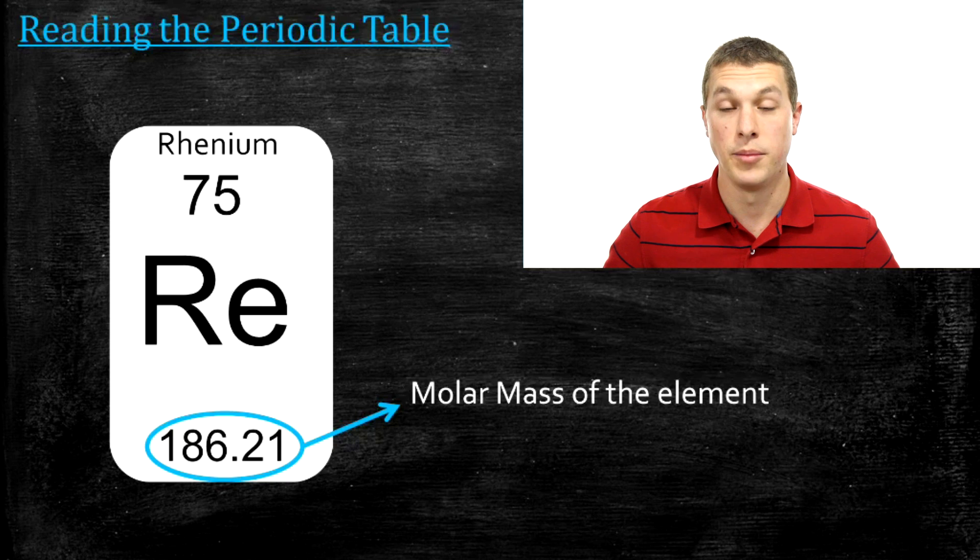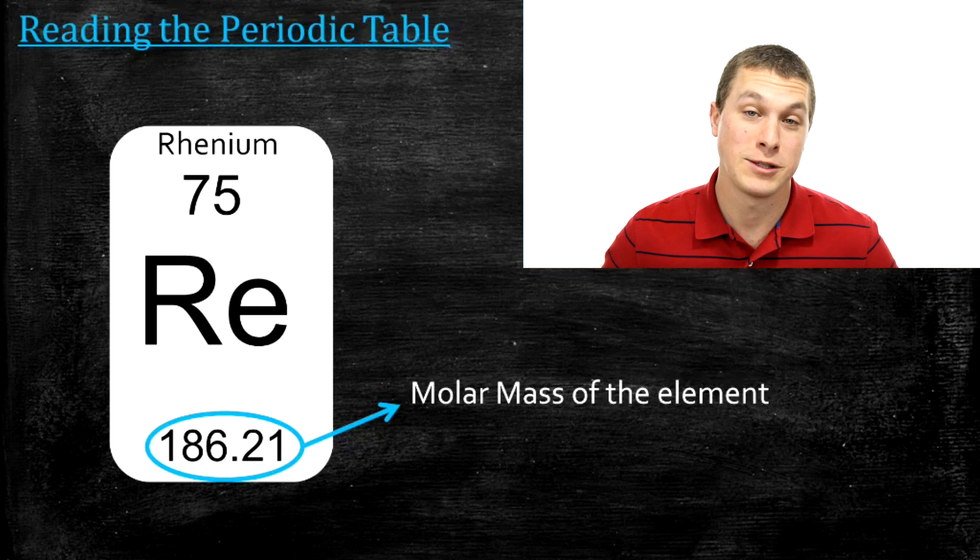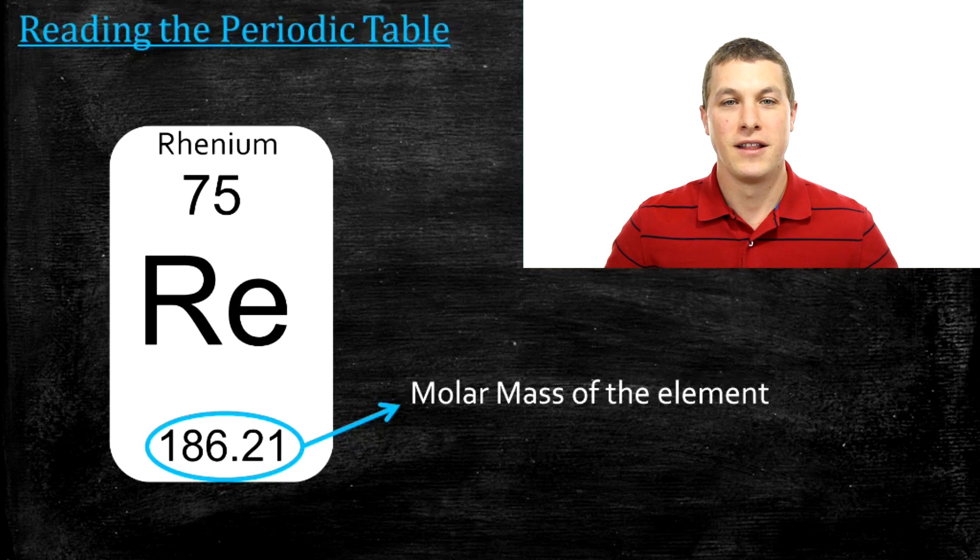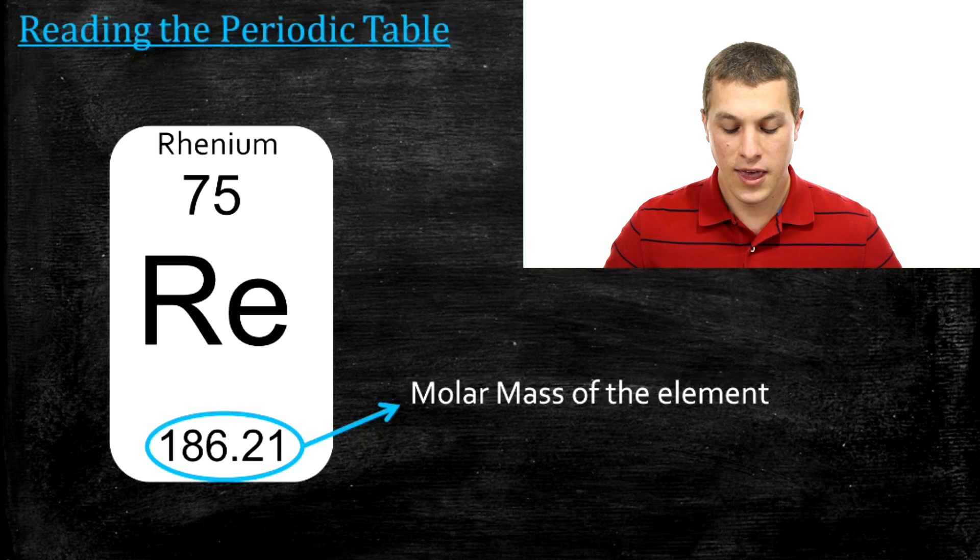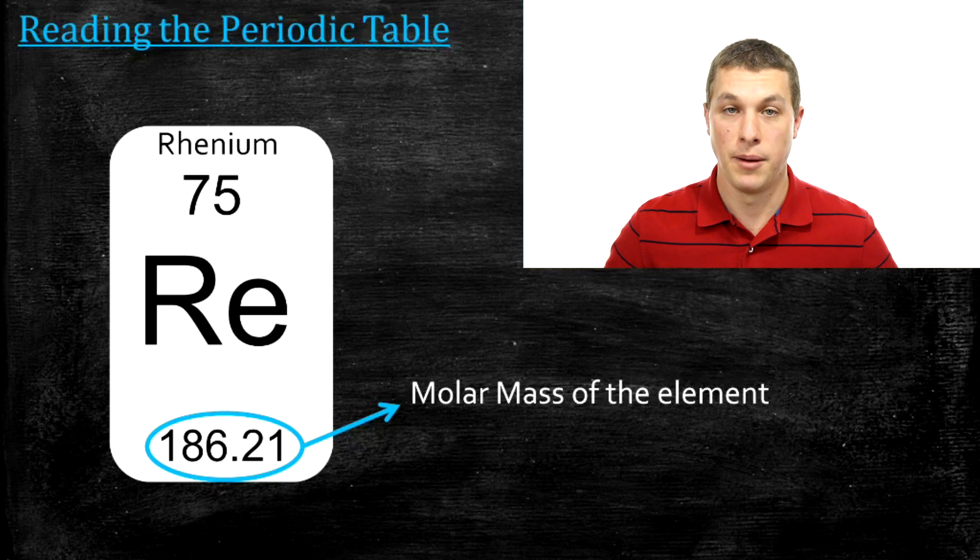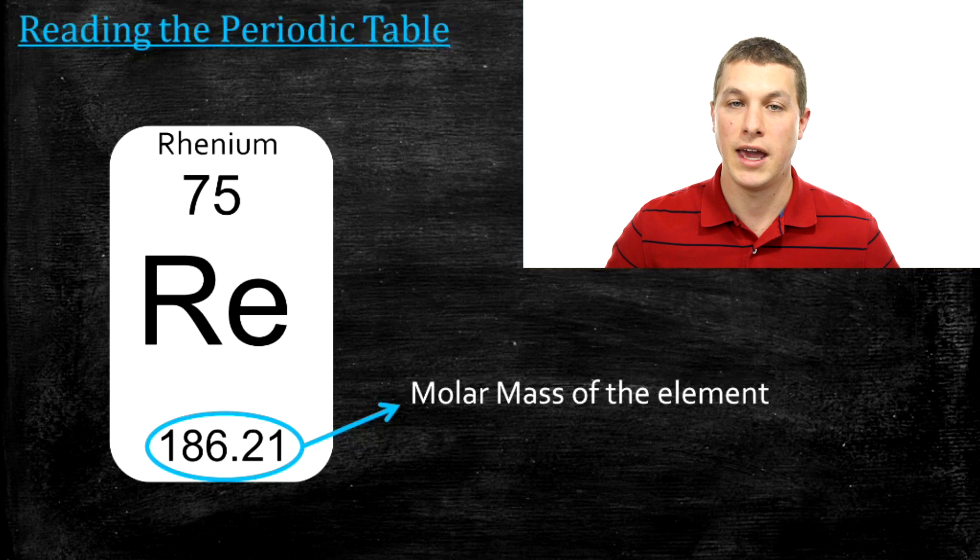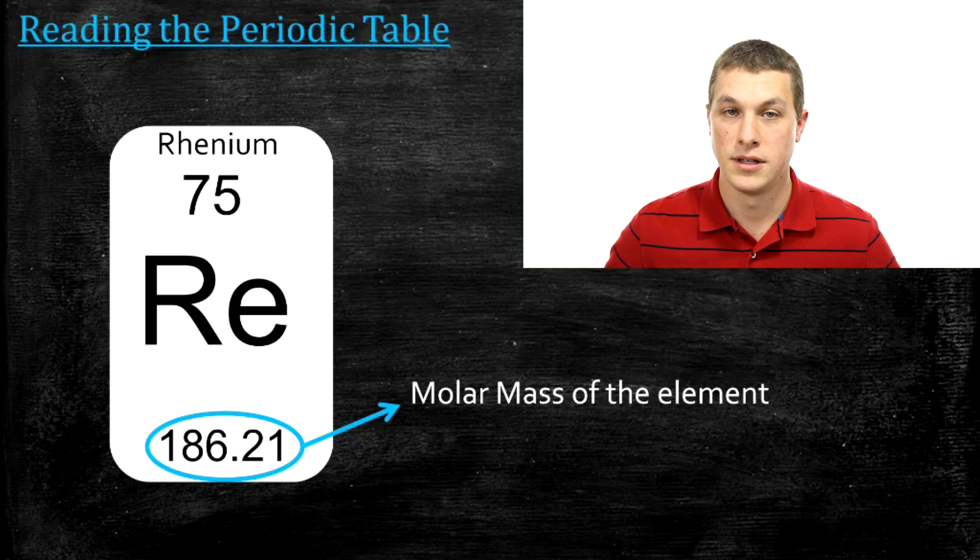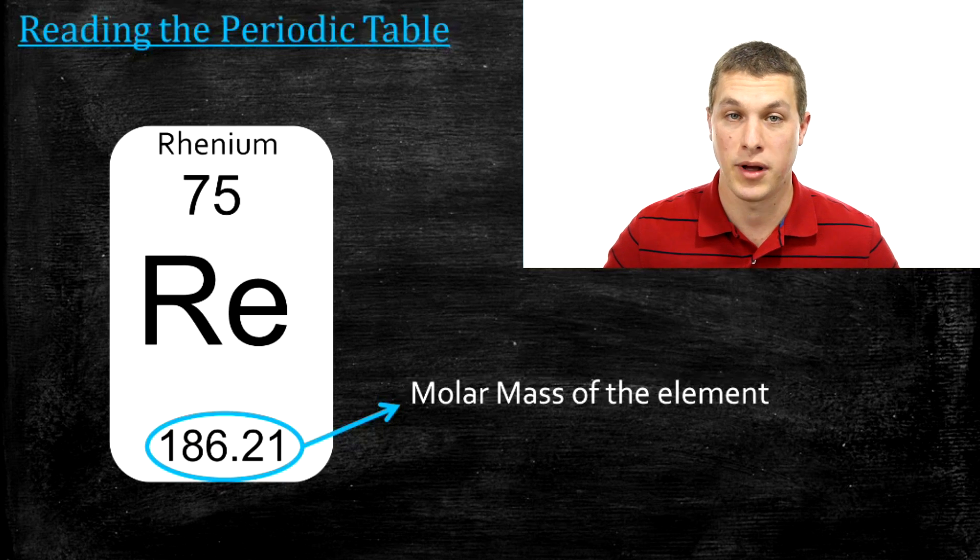Another important aspect that you see on the periodic table is this molar mass. So at the bottom of every single square that has an element on it, you'll see a number. And what that is, is the molar mass.